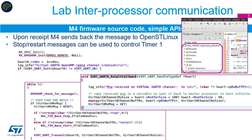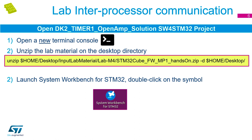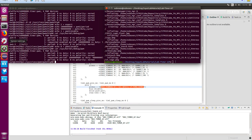Here you can see the software for the virtual UART channel. There's a callback routine with commands based on the received buffer to either stop or restart the timer. There's the timer interrupt, which is either stopped or started depending on which message was received. Both of these routines are in main.c, which we'll open in a moment. In the terminal window, we need to go and unzip the lab material for the hands-on lab M4.